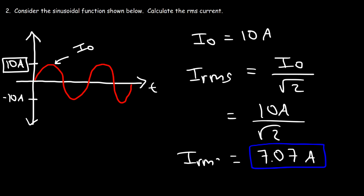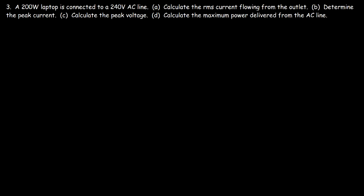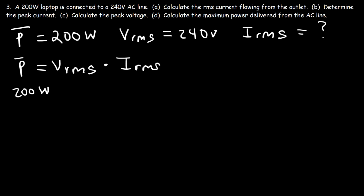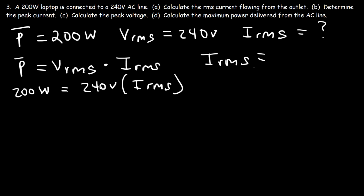Problem 3: A 200-watt laptop is connected to a 240-volt AC line. Calculate the RMS current flowing from the outlet. The average power consumed is 200 watts, and the line voltage represents the RMS voltage of 240 volts. The average power equals RMS voltage times RMS current, so 200 watts equals 240 times the RMS current. Therefore the RMS current is 200 divided by 240, which equals 0.8333 amps.